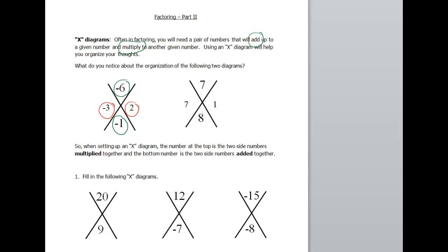Okay, so after giving you a couple seconds there to think, hopefully you notice that if you multiply negative 3 and positive 2, you get the negative 6. And if you add negative 3 plus 2, you get the negative 1. So the number at the top is always going to be our two side numbers multiplied. The number on the bottom is going to be our side two numbers added.